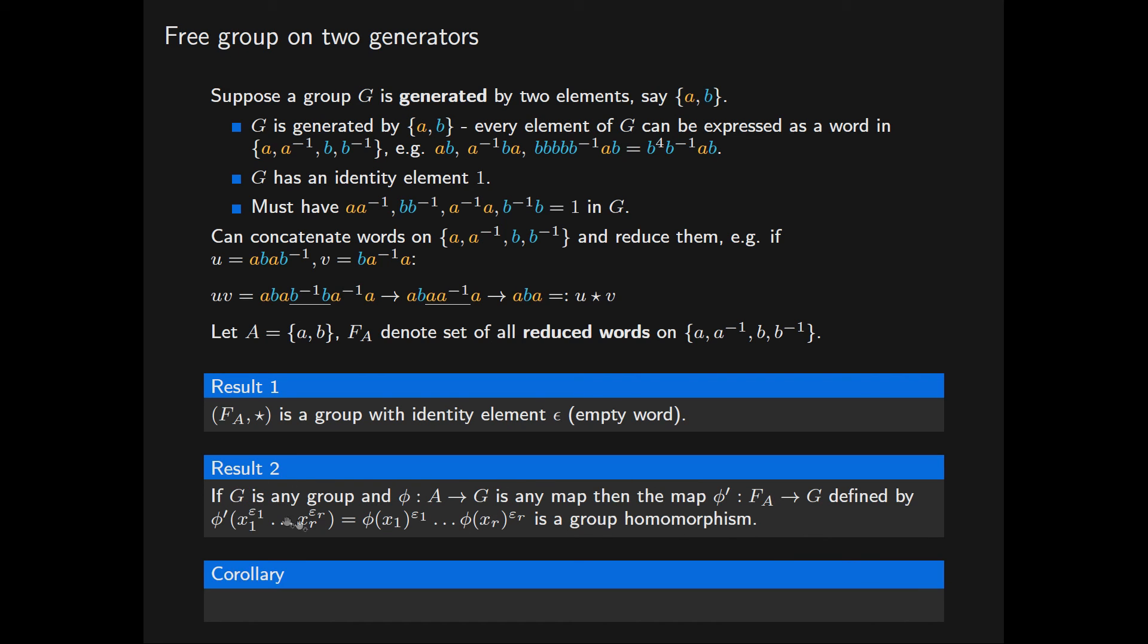A corollary from this result is that any group generated by two elements is a quotient of this group F(A). To see this, consider any group generated by two elements a, b. Let phi be the map from A into G defined as follows: we send this letter a to this element a, and the letter b to the element b. Then by result 2, that will extend to a group homomorphism from F(A) into G.